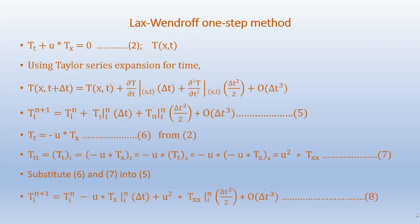The first finite difference method we are going to look at is the Lax-Wendroff one-step method. Coming back to the 1D convection equation, T_t plus u times T_x equals 0, where T is a function of x and t. Using a Taylor series expansion for time: T(x, t+Δt) equals T(x, t) plus (∂T/∂t) times Δt plus (∂²T/∂t²) times Δt² over 2, plus terms of order Δt³. This can be written as T_i^{n+1} equals T_i^n plus T_t_i^n times Δt plus T_tt_i^n times Δt² over 2.